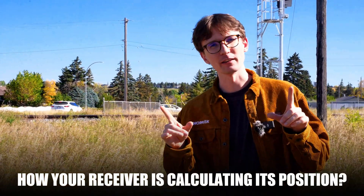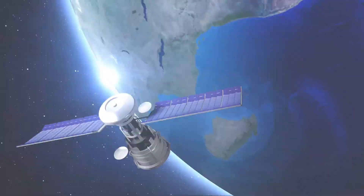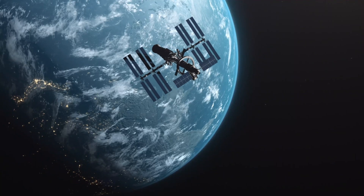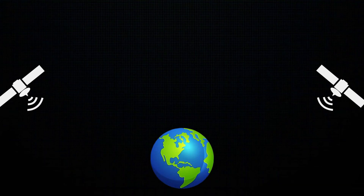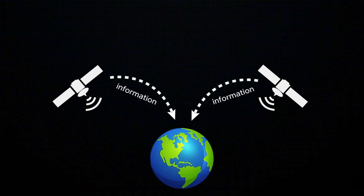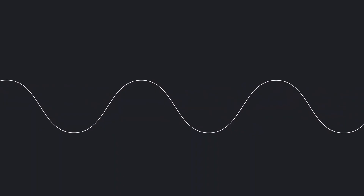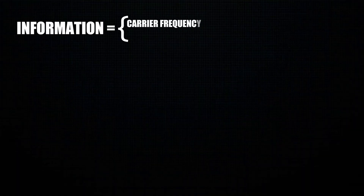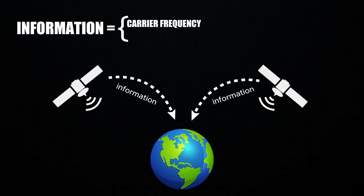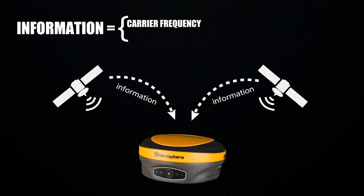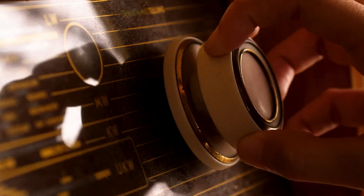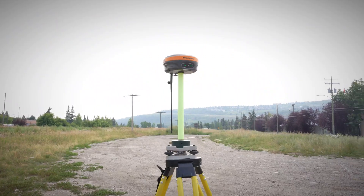To understand how your receiver is calculating its position, we need to understand what the satellites are telling us. Before anything reaches your receiver, the satellite is beaming down information to the earth, and what is contained on that beam is what allows you to calculate your position. That beam is made up of several different parts. There's the carrier frequency, which is the frequency at which the satellite emits its information — think of it like your radio frequency when you're tuning into a station on your car. That channel you're tuning into is the same idea for a satellite; it contains all the information and the receiver knows to look for it.